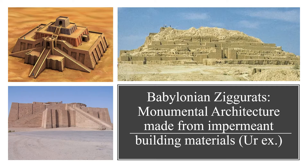Now we'll talk about Babylonian monumental architecture, namely their ziggurats. The example we're using here is from Ur, a city that's much older than the Babylonians but became very important to the Babylonian civilization. The peoples of Mesopotamia tended to use a lot more mud bricks in their construction, meaning that even their greatest buildings would break down with time, leaving behind tells, like you can see here.